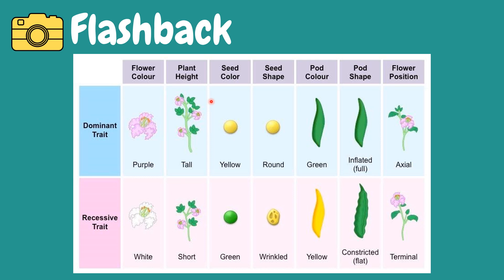Based on the experiment conducted by Gregor Mendel, there will only be two possible traits that can be inherited by the offspring. That's why he came up with the idea about dominant traits and recessive traits. In accordance to his experiment, purple color of flower, being a tall plant, having a yellow seed color, round shape seed, green pod color, inflated pod shape, and axial position of flower are all dominant traits.